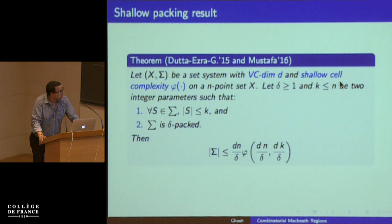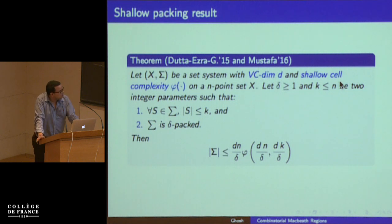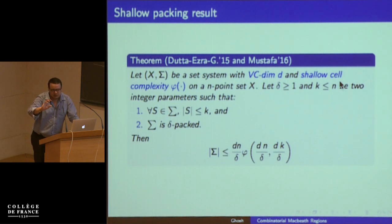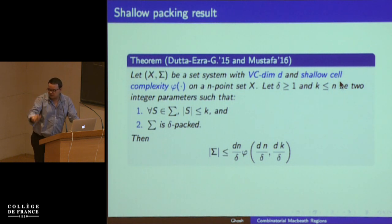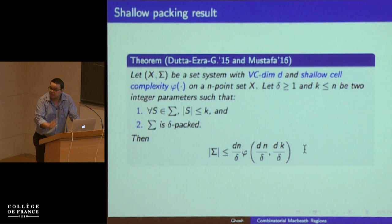You can prove a more refined version of this result — the shallow packing lemma. Let's say your set system has VC dimension D, shallow cell complexity phi, and every set in the set system has size at most k, and any two sets are delta-separated (symmetric difference greater than delta). Then the set system can have at most a certain bounded number of sets, and this bound is also tight.